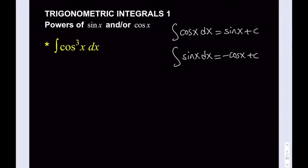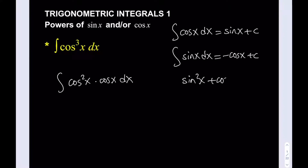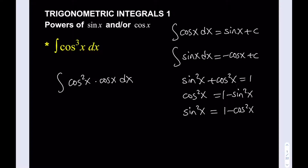What we're going to do is split this up into cosine squared of x times cosine of x dx. The reason we do that is because we want to use u-substitution, and in order to do that we're going to use the Pythagorean identity: sine squared x plus cosine squared x equals 1. This allows you to write cosine squared x in terms of sine squared x and vice versa. So I'm going to replace cosine squared with 1 minus sine squared.